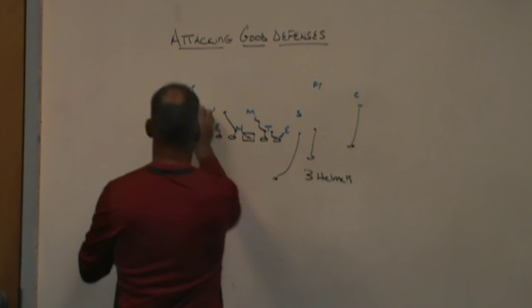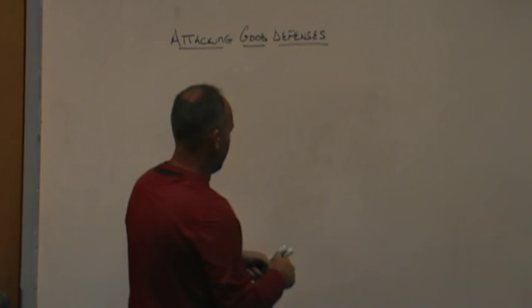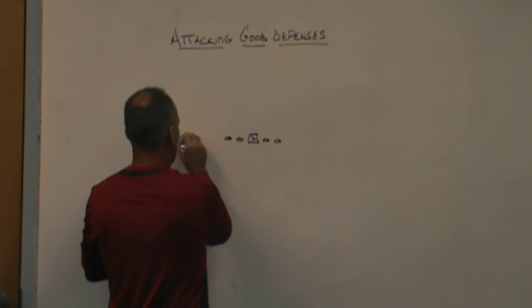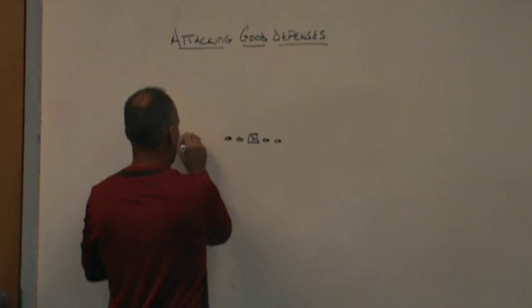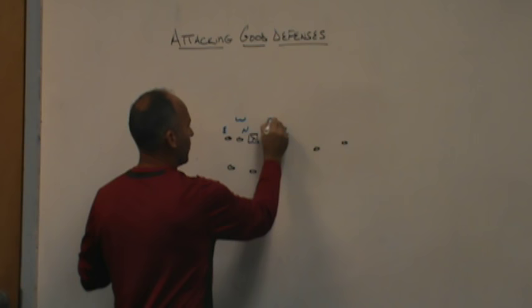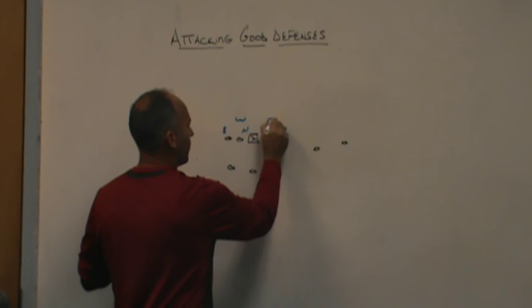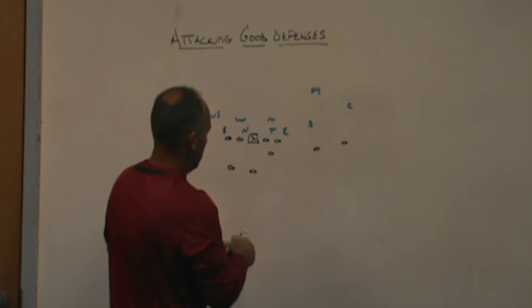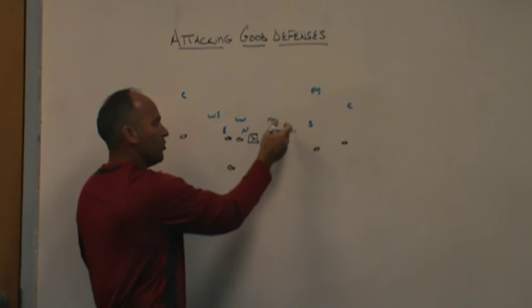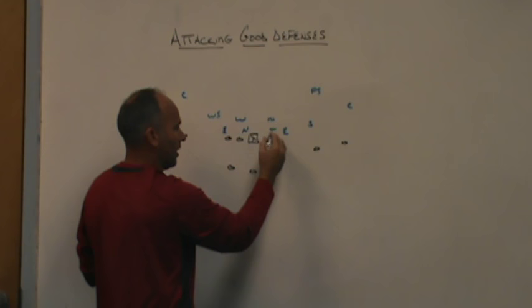The next thing you can do versus teams that like to block down, step down, spill, and wrong-arm is, if you're a two-back team, you can run old-fashioned buck sweep. Put yourself in a two-back set and run something similar to Wing-T buck sweep, where you down block the three technique. You give that end a chance to block down, step down, squeeze the air out, wrong-arm, and spill. Then you take the slot to crack the Mike — he's really the tight end or wing in a Wing-T set — and use a push crack out here depending on who the support player is.